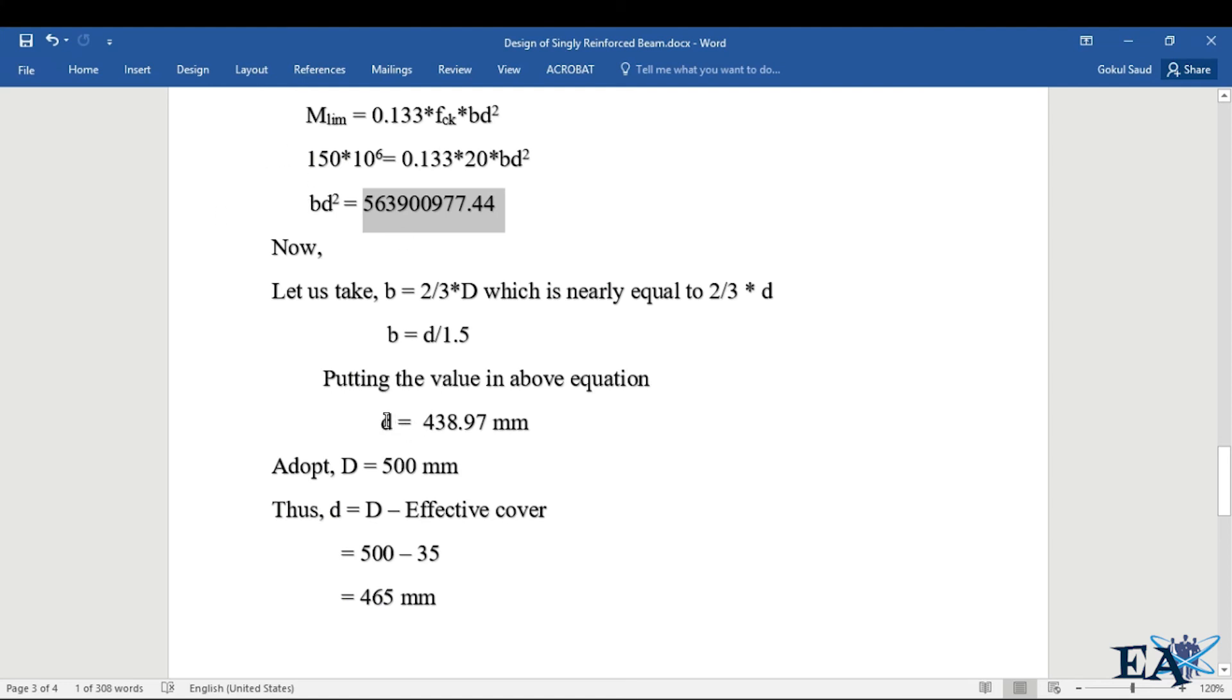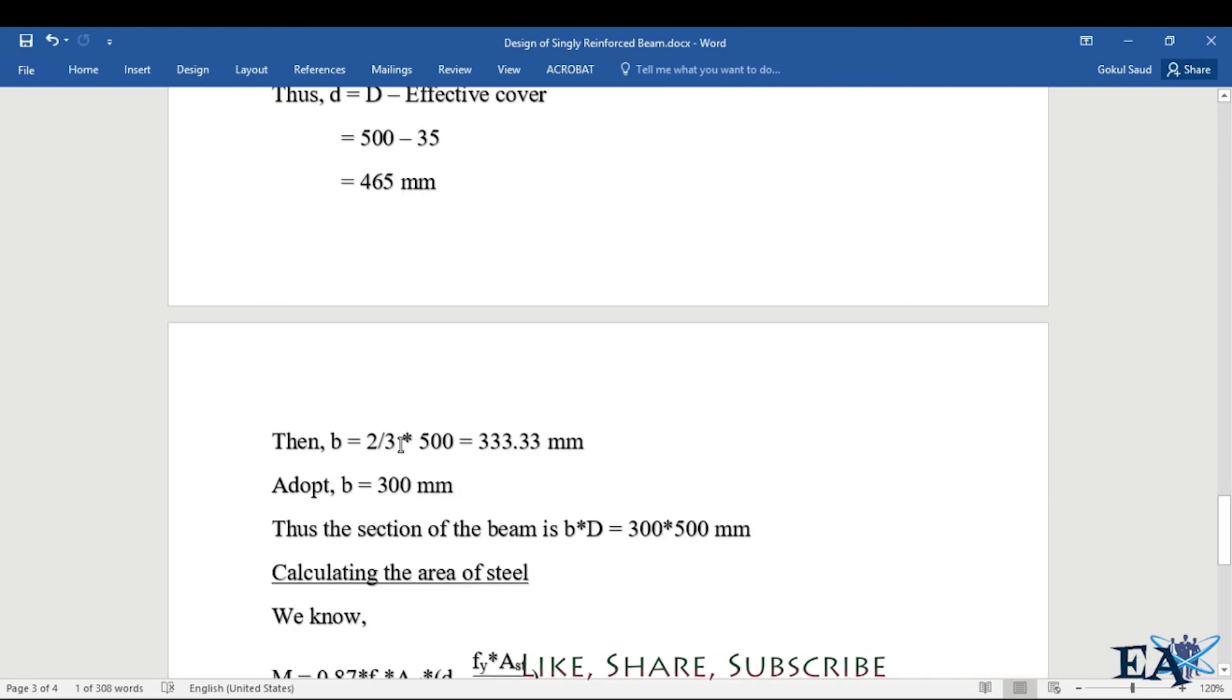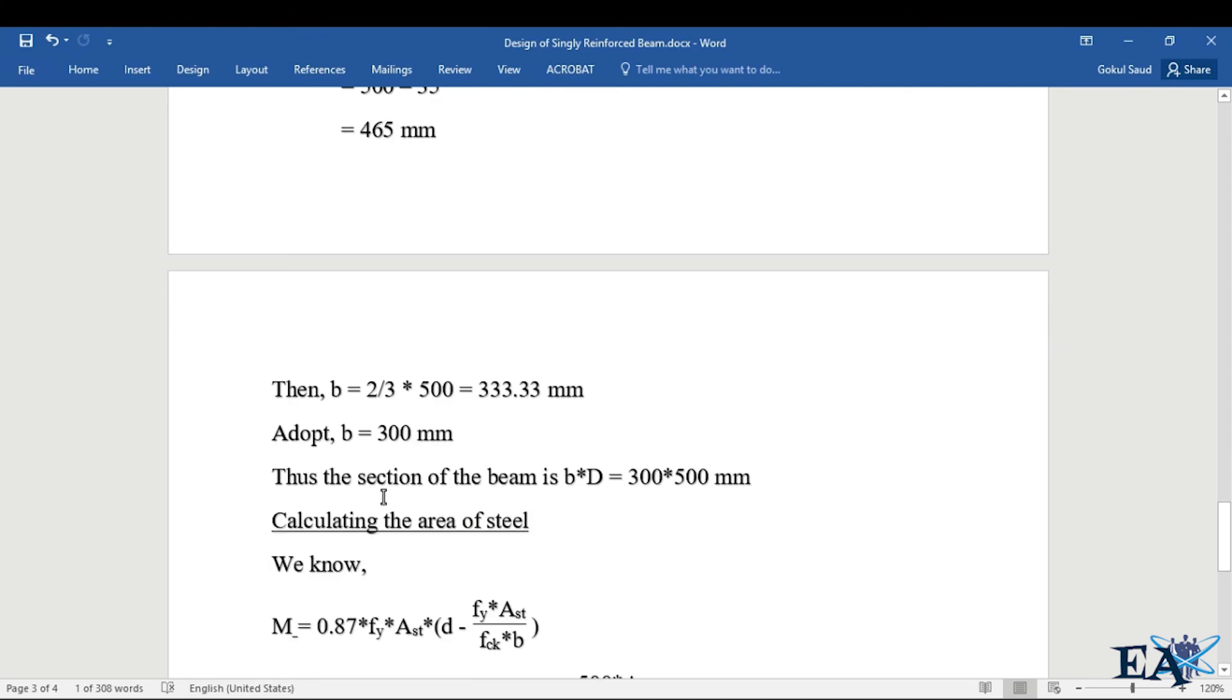So adopt capital D = 500 mm. Thus d = D minus effective cover = 500 minus 35 = 465 mm. Then b = 2/3 × 500 = 333.33 mm. So we adopt b = 300 mm. The section of the beam is b×D. Always represent the section of the beam as breadth times depth. So first comes breadth, then depth. We get b as 300 and capital D as 500 mm.